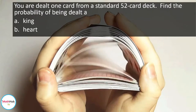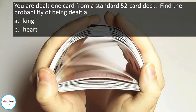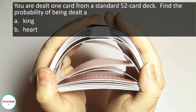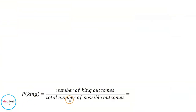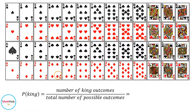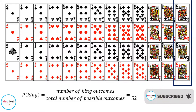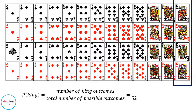You are dealt one card from a standard 52-card deck. Find the probability of being dealt (a) a king and (b) a heart. We follow the formula for theoretical probability: the number of king outcomes divided by the total possible outcomes. In a standard deck of cards, there are a total of 52 cards, so the denominator is 52. There are 4 different kings, so the number of king outcomes is 4. The probability of getting a king is 4 over 52, which reduces to 1 over 13.